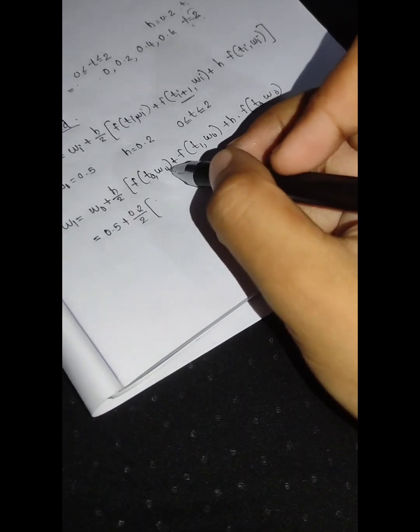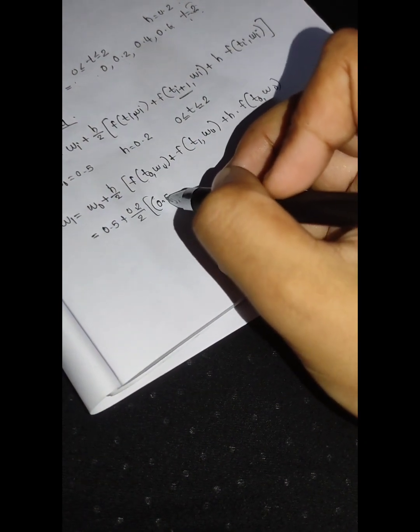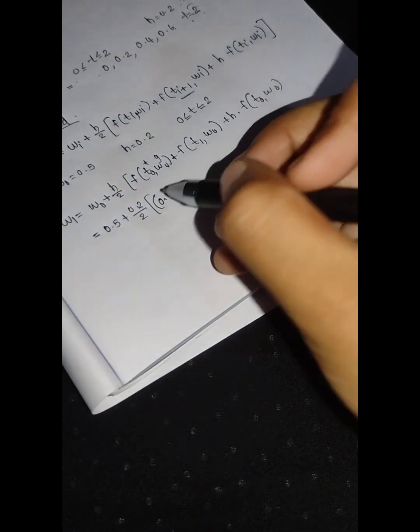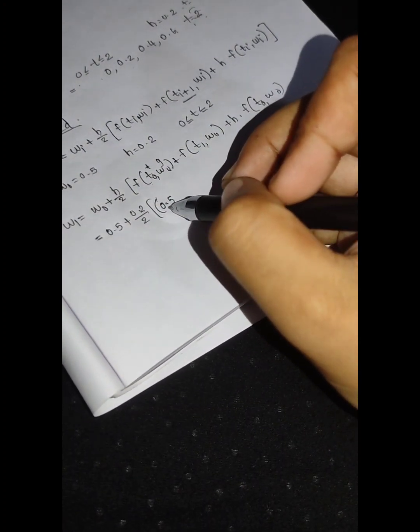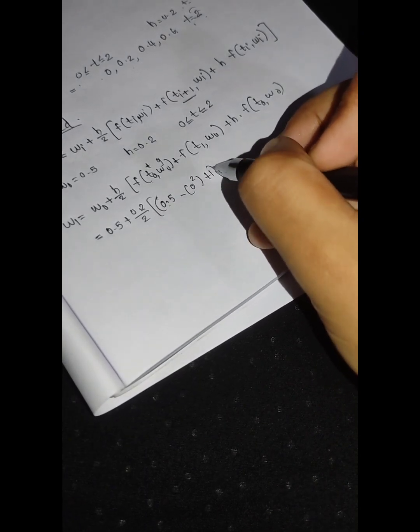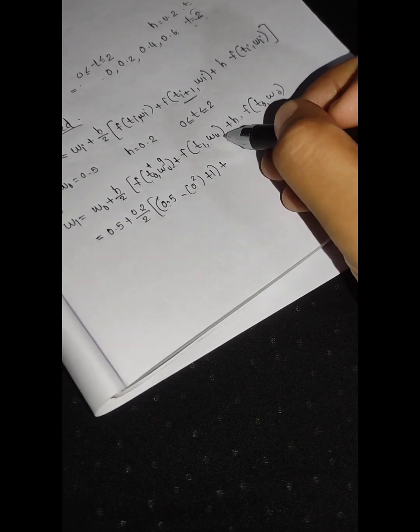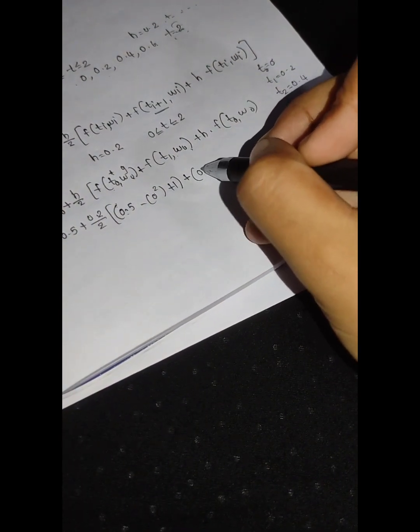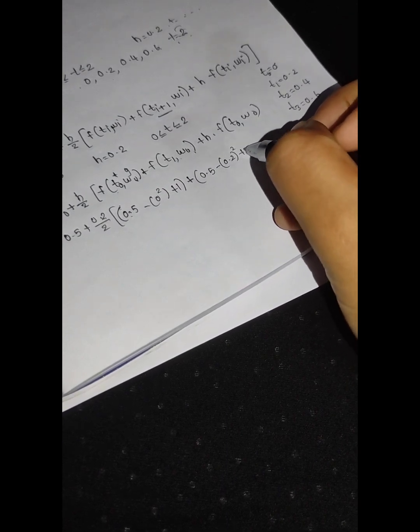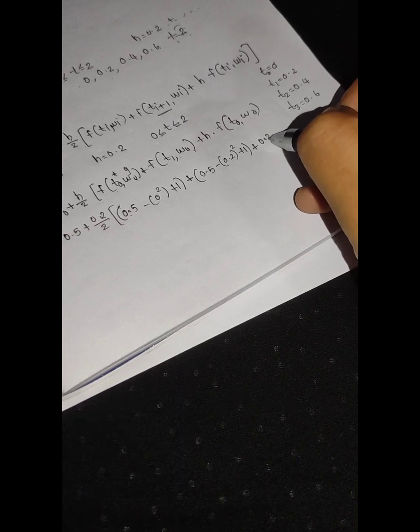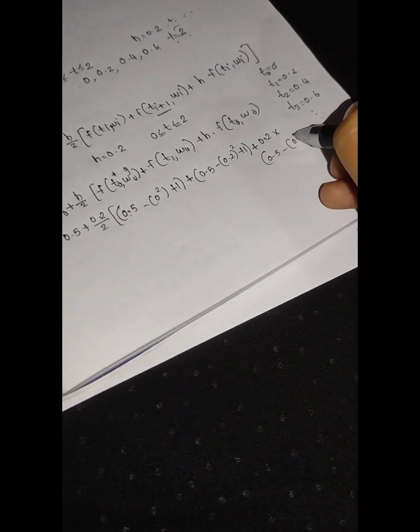For i equal to 0: f(t0, w0) uses the equation y minus t squared plus 1, so f(0, 0.5) equals 0.5 minus 0 squared plus 1. Then f(t1, w0 plus h times f(t0, w0)) follows. We evaluate f at t0, w0 and also at t1, with the updated value. With h equal to 0.2, we get 0.5 minus 0 squared plus 1 plus h times 0.5 minus 0 squared plus 1.